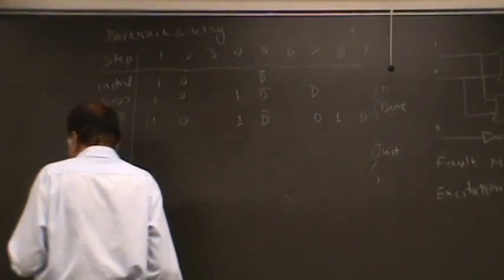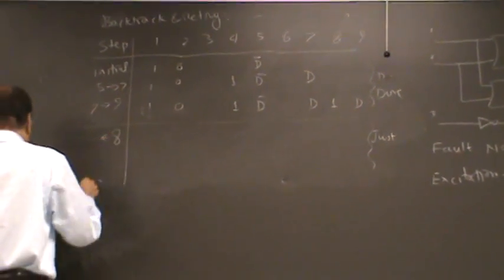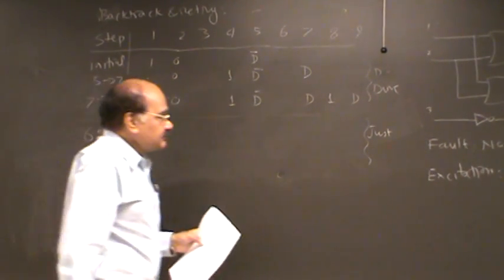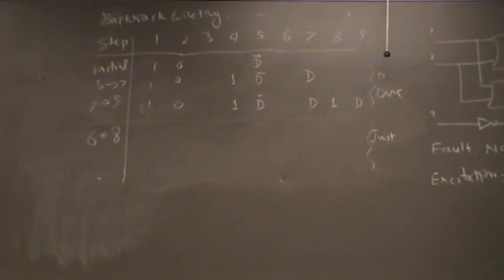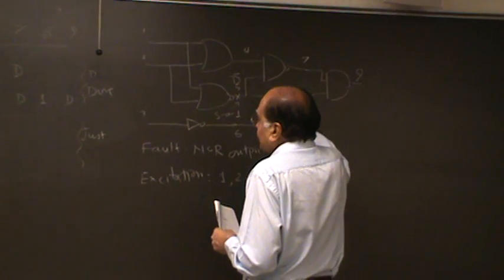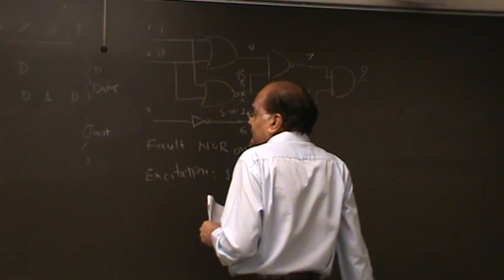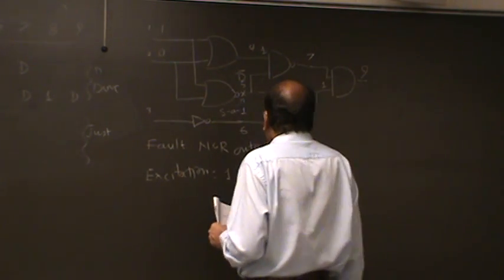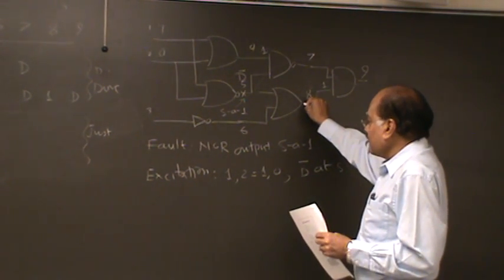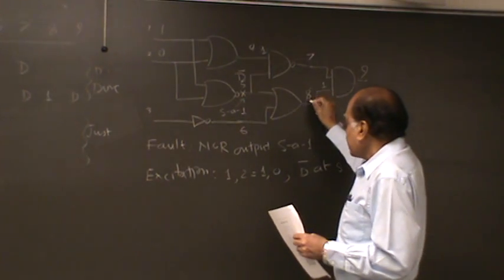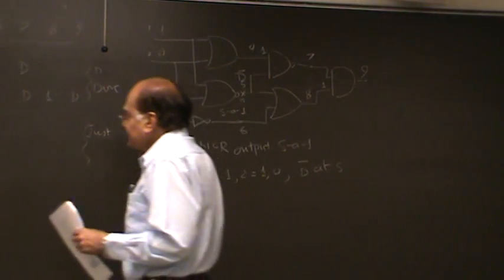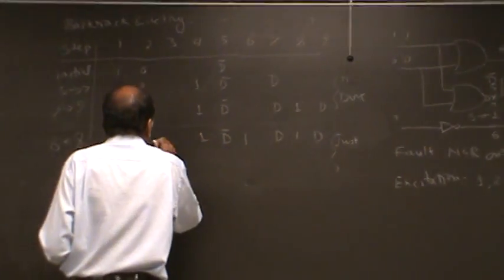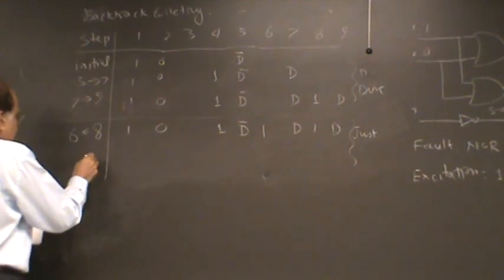Now justification, let's see if we can justify. Can we justify the value at line eight by picking an appropriate value on line six? So we have chosen line four to be a one and line eight to be a one. We want to justify this eight. Notice we have a one here, and a D bar here, so if you have a one here you need a one here. So line six needs to be a one.